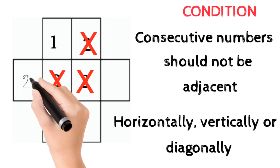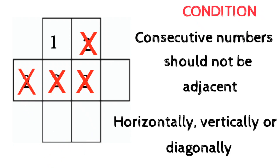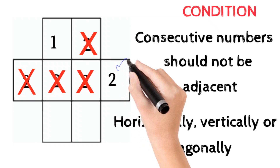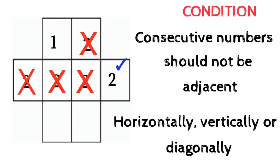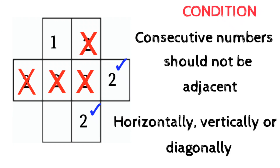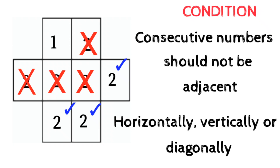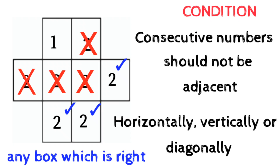If I write two in another diagonally adjacent box, one and two are still diagonally adjacent — also not correct. So where should we fill two? If I fill two here, one and two are not adjacent and are far away — this is a correct filling. Similarly, two can go in this box or this box, as long as one and two are not adjacent. Out of these correct options, you can choose any box that satisfies the condition.